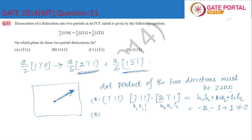For option B, the (111) plane, the direction normal to this plane will be [111].